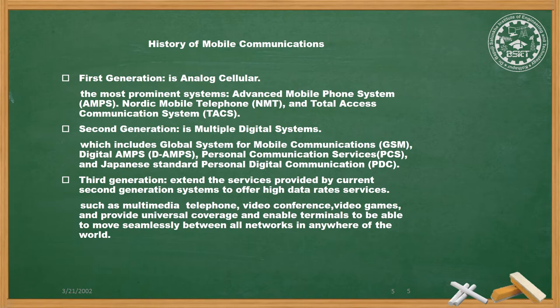Let's see the history of mobile communication. In first generation it was analog communication and analog cellular. The most prominent systems were Advanced Mobile Phone System (AMPS), Nordic Mobile Telephone (NMT), and Total Access Communication System (TACS). In second generation, multiple digital system schemes included Global System for Mobile Communication (GSM), Digital AMPS (D-AMPS), Personal Communication Services (PCS), and Japanese standard Personal Digital Communication (PDC).